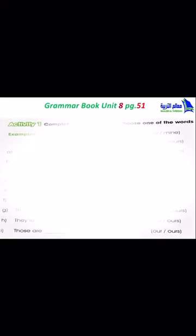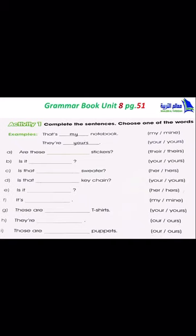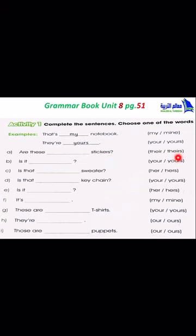Now we will move to the grammar book. Take out your grammar book and open page 51. Activity one — complete the sentences. Choose one of the words on the right. A: Are these ___ stickers? Their or theirs? We find the word 'stickers' after the space — it is a noun, so we choose the adjective. The answer is 'their'. Are these their stickers?